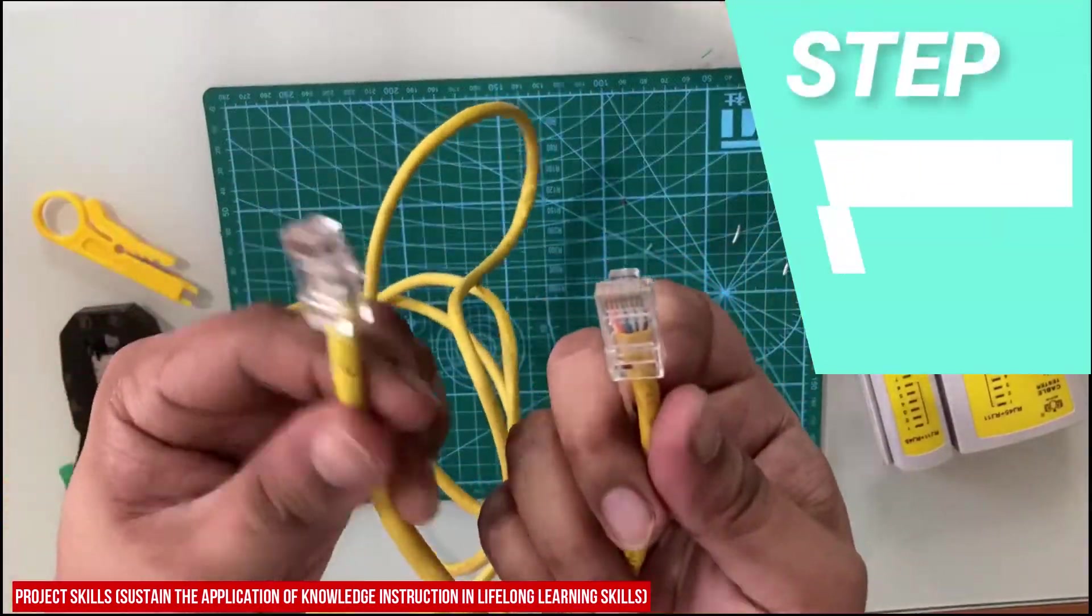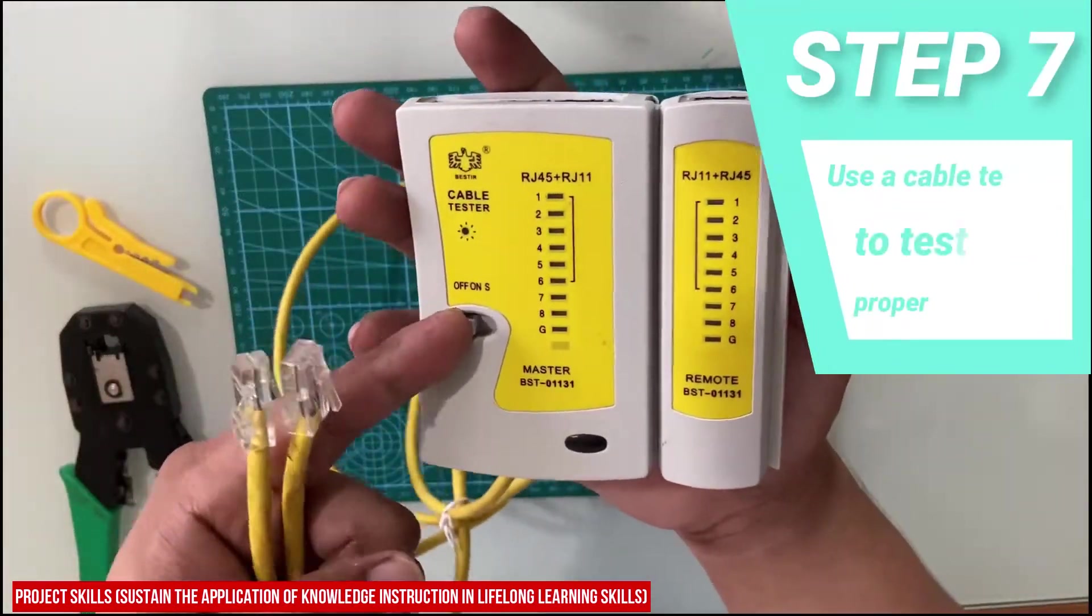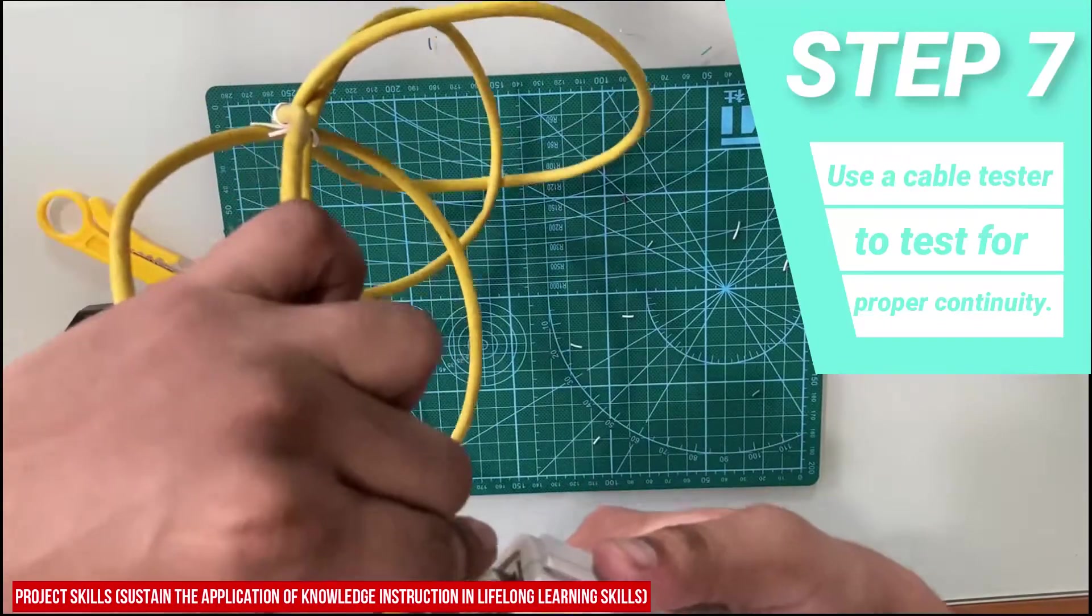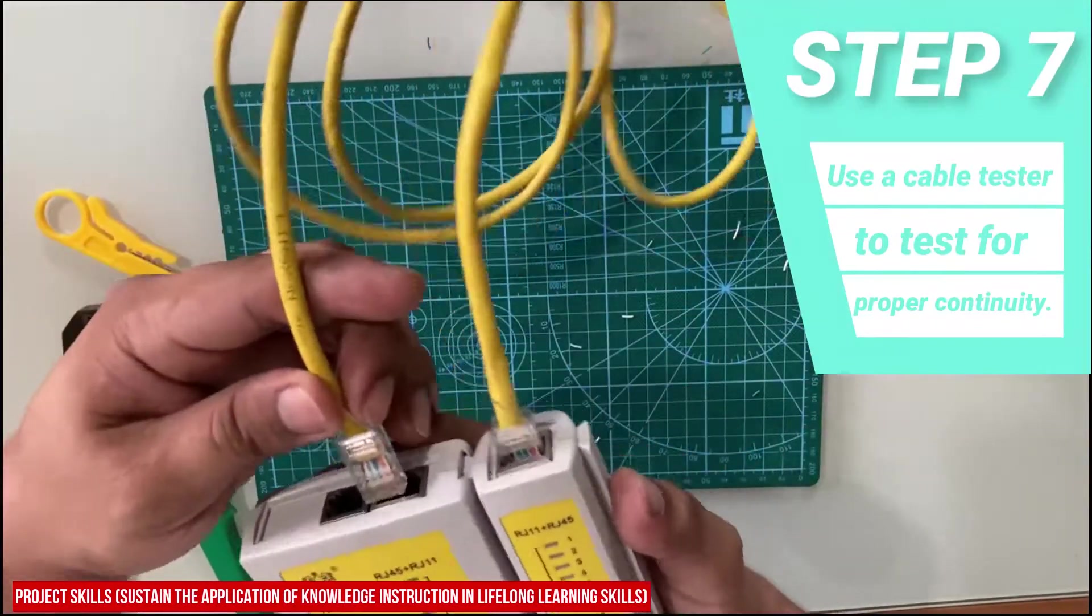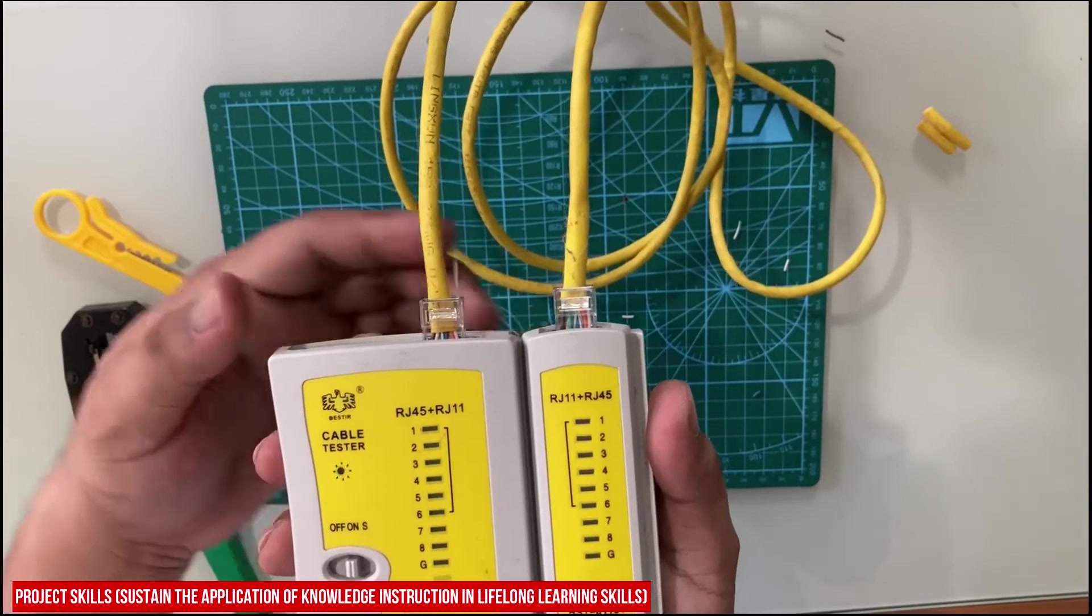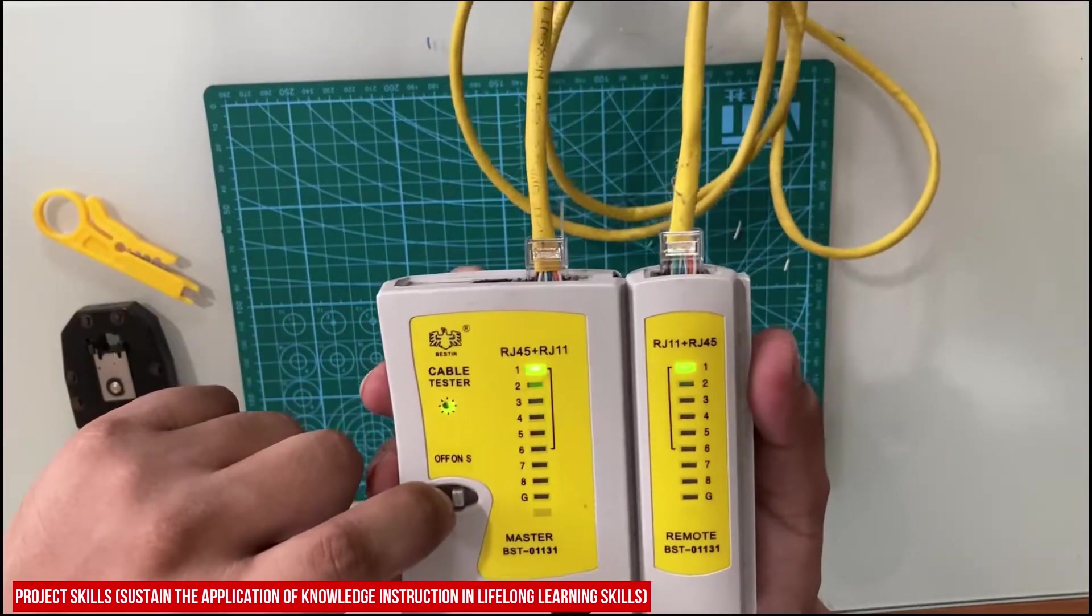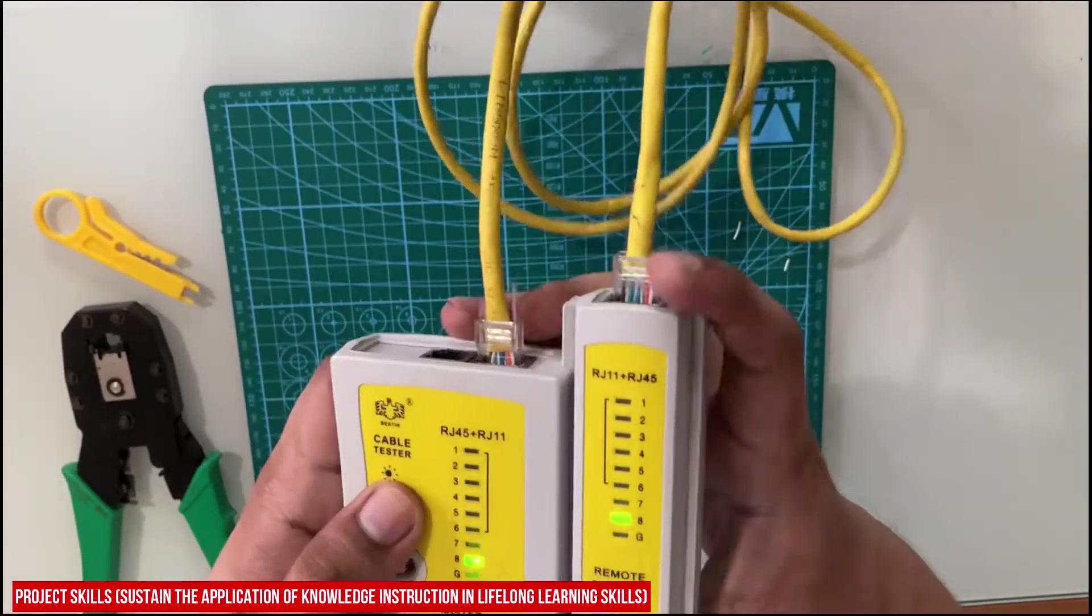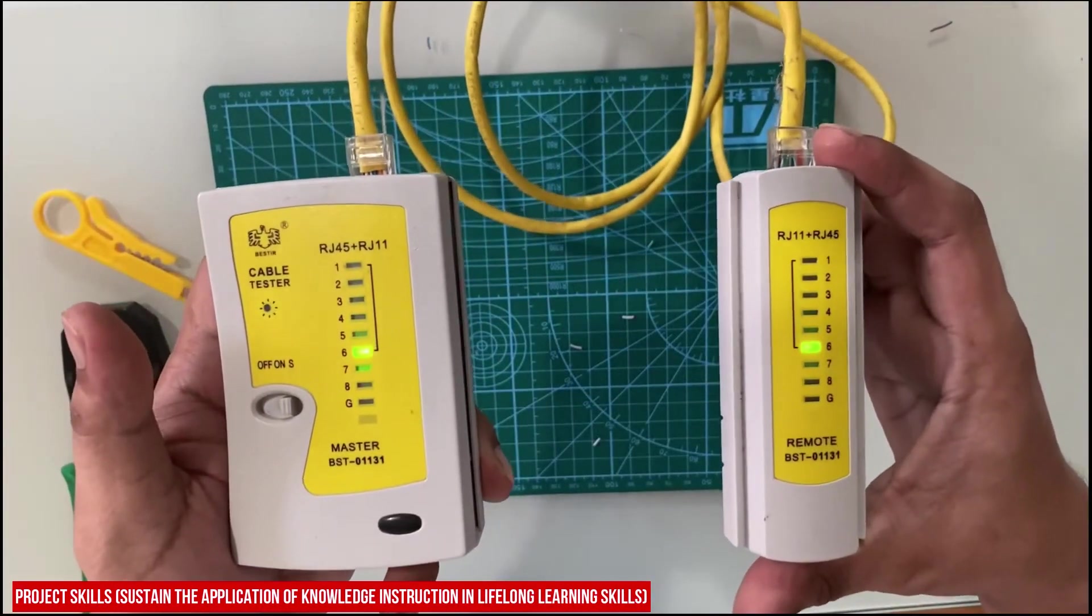The eighth step is you need to use the LAN tester to test for proper continuity. The LEDs per wire must light up at the same time to establish connection. If the LEDs did not light up or if the LEDs did not match the lighting of the wires, then you need to start again from step 2 to step 8 until you establish correct continuity.